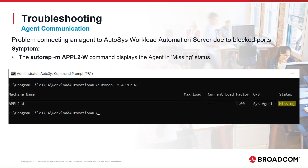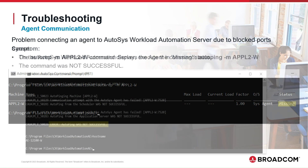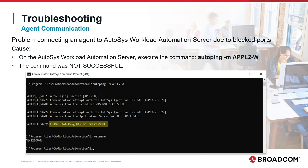Let's now review some agent communication problems. First, we will review a connectivity problem between the Autosys agent and the server due to blocked ports. We execute the autorep command with the -m option and the agent machine name. The agent appears in missing status. To identify why, we execute an autoping command on the Autosys server to verify communication. The autoping was not successful — there is some connectivity problem between the server and the agent computer.